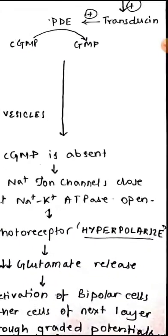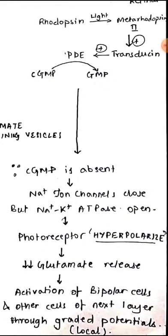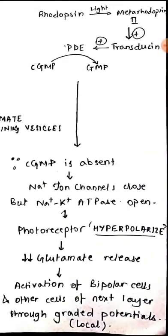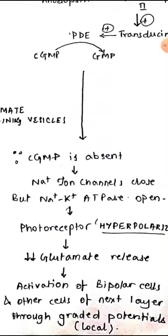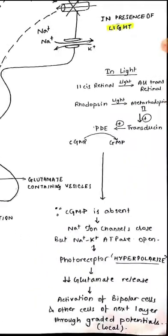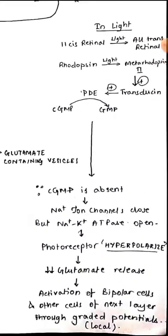Because of which the photoreceptor or the rod cell is hyperpolarized. This hyperpolarization leads to less amount of glutamate being released and thus activation of the bipolar cells and other cells of the next layer through local graded potentials, basically the IPSPs and EPSPs.